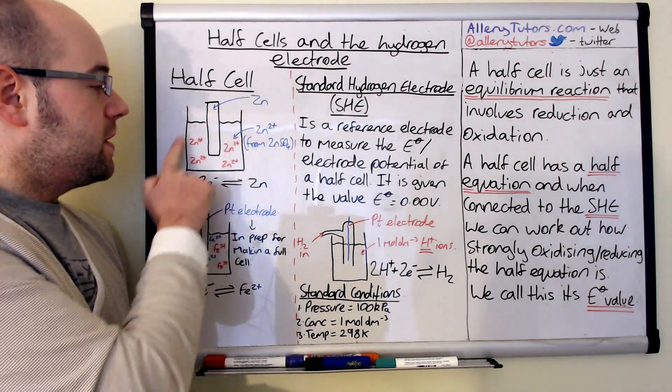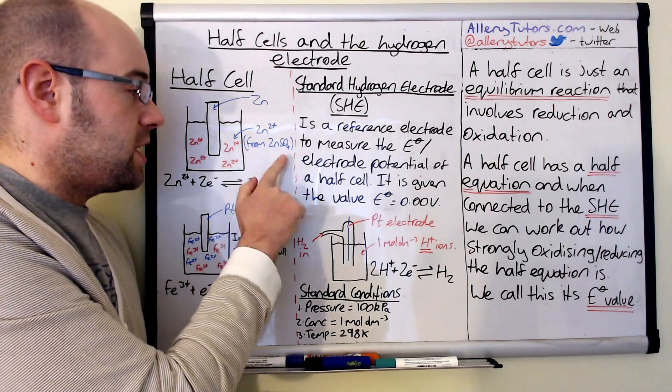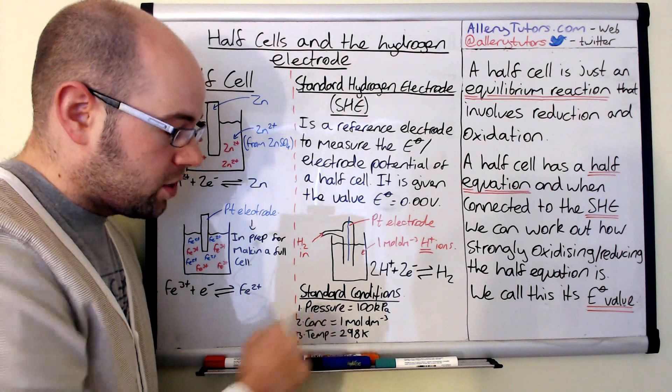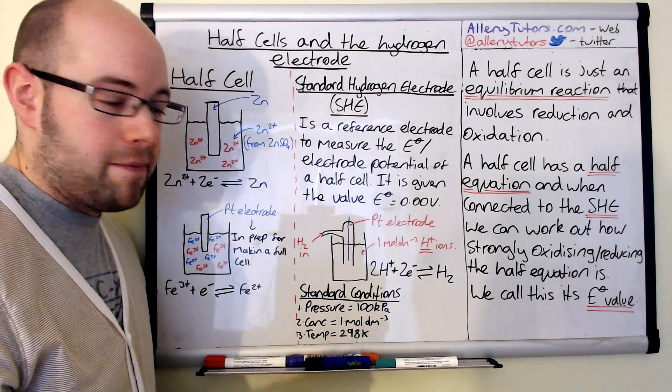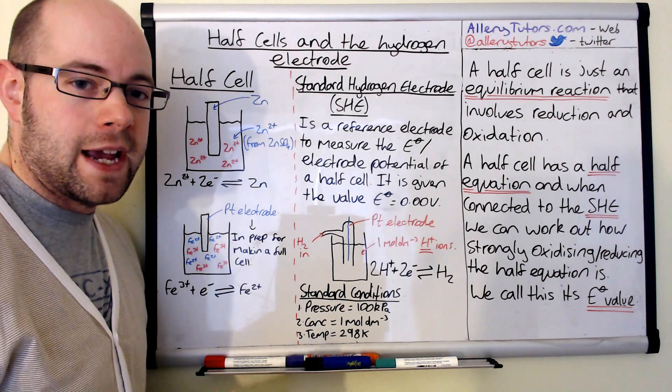The concentration of all solutions that are involved have got to be one moles per dm cubed. For example, this is zinc two plus. This has got to be one moles per dm cubed of zinc sulfate solution in this container here. Also, the temperature has got to be room temperature, which in chemistry terms, the standard room temperature is 298 Kelvin.